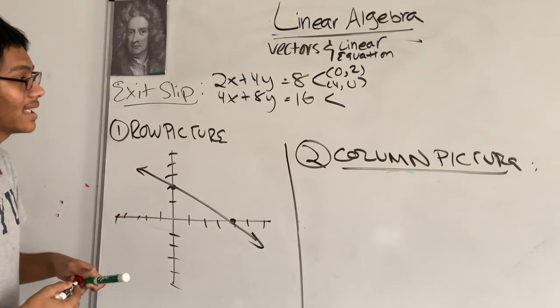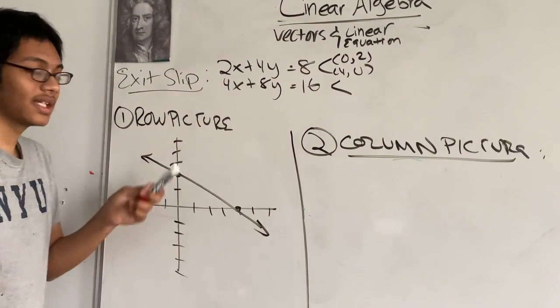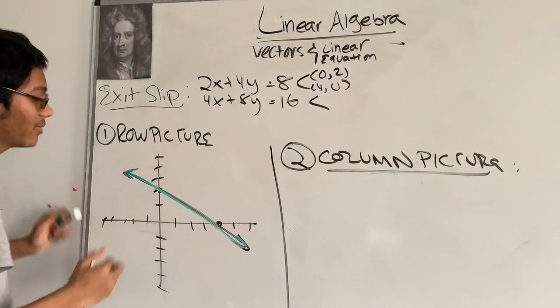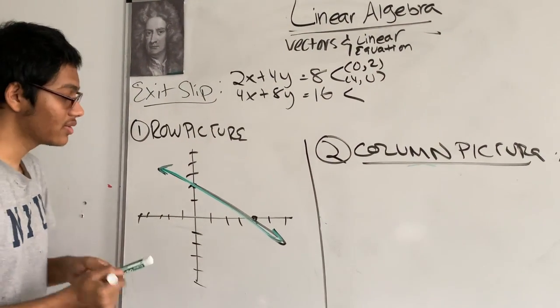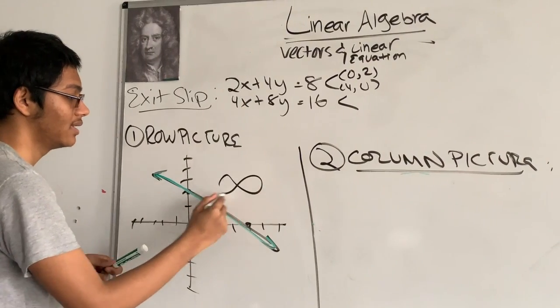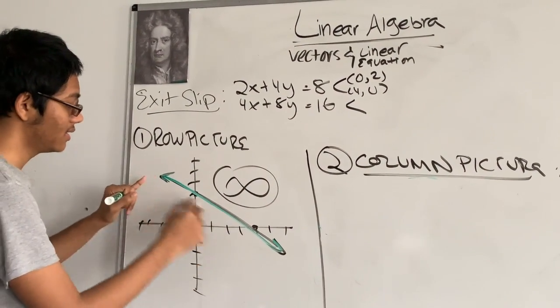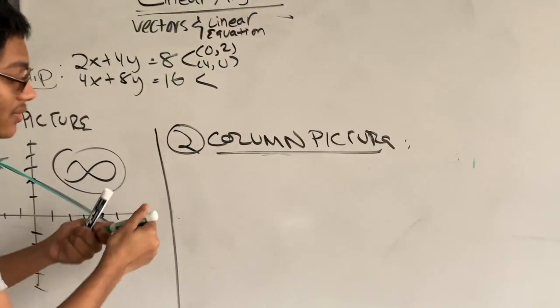But if you notice, my second line is also satisfying the same two points, meaning that my second line lies on top of my first one. So, how many solutions are there? Turns out, there's an infinite number of solutions, all of which exist on this 2D line.